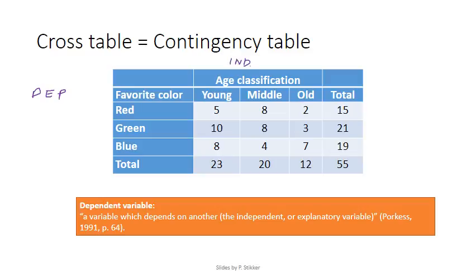Some textbooks will say that the independent variable should go into the columns and the dependent variable should go into the rows, like in this example. There are a few other textbooks that say this should be the other way around. Most textbooks put the independent variable in the columns and the dependent one in the rows. One deviation from this is if you have a lot of different values in the independent variable — it might not fit on your page, so you could swap the two around.